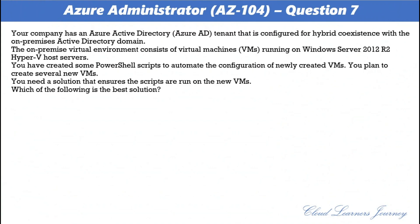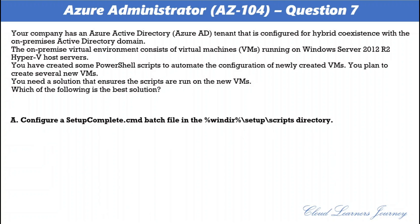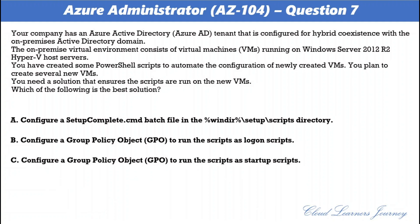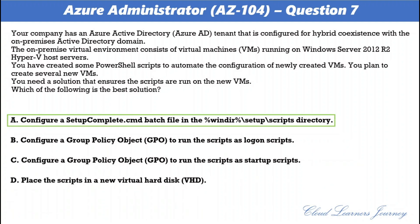Question number seven. Your company has an Azure Active Directory tenant configured for hybrid coexistence with the on-premises Active Directory domain. The on-premises virtual environment consists of virtual machines running on Windows Server 2012 R2 Hyper-V host servers. You have created some PowerShell scripts to automate the configuration of newly created VMs and plan to create several new VMs. You need a solution that ensures the scripts are run on the new VMs. The correct option is A: configure a SetupComplete.cmd batch file in the %windir%\setup\scripts directory.